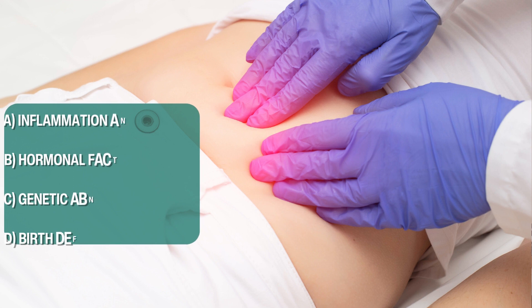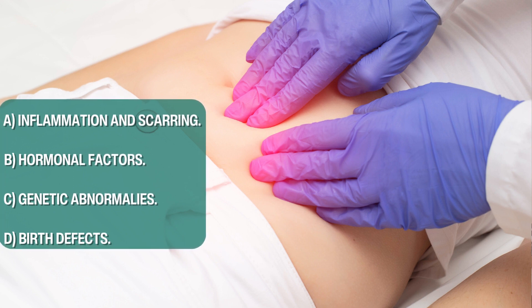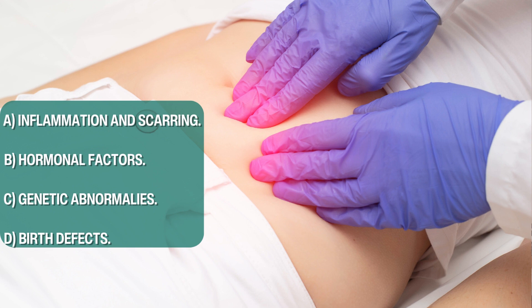The causes of ectopic pregnancy are not entirely clear, but there are some conditions associated with it. These may include inflammation and scarring of the fallopian tube, hormonal factors, genetic abnormalities of the fallopian tube itself, certain birth defects of the fallopian tube, and uterine abnormalities such as congenital abnormalities of the uterus.